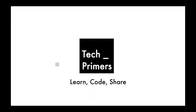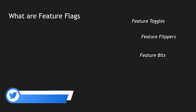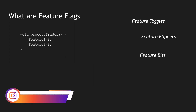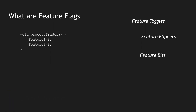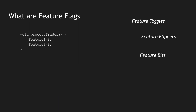So what are feature flags? Feature flags are usually referred to as feature toggles, flippers, or even feature bits. These are efficient techniques using which we can modify the behavior of the system without changing any code. Let's take an example — we have a method called 'process trades' which has different methods getting called, like feature 1 and feature 2, with some implementation in there.